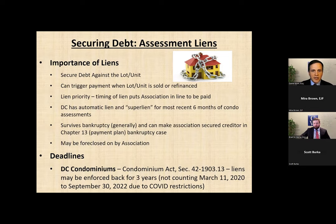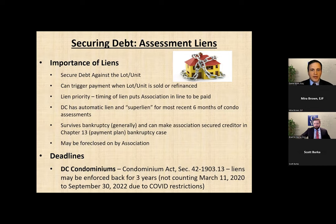In DC there is a concept of an automatic lien, and for DC condos, a super lien for the most recent six months of condo assessments. What a super lien is: it allows the association to jump ahead of other creditors potentially. There has been some recent case law in DC that affects this super lien, which Brad will talk about in a few minutes. But for now the super lien still exists by statute and can in some instances be an effective way to put pressure on debtors to make payment. Another good thing about assessment liens is that generally they survive a bankruptcy.